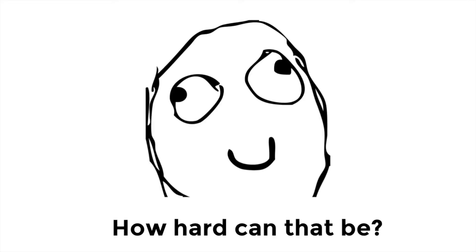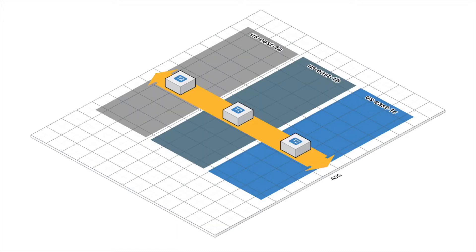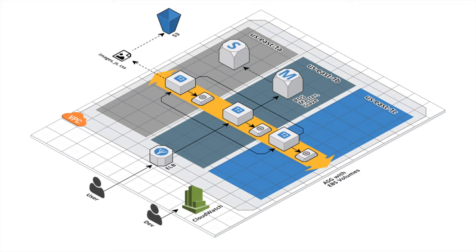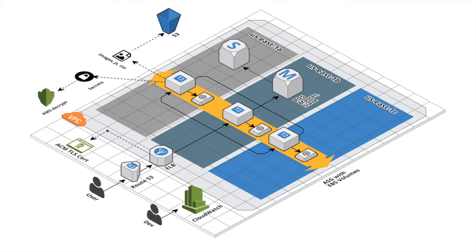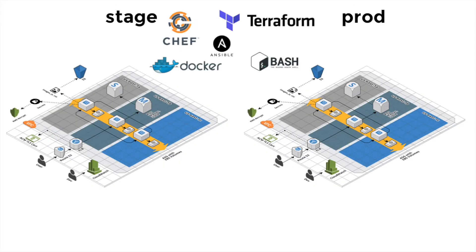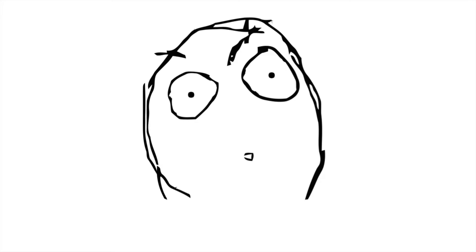Imagine you just finished building your latest application and it's time to deploy. How hard can that be? It starts out pretty easy with one server, but soon you realize you need more than one for high availability. Then you need a load balancer, you've got to store data somewhere, monitoring and alerting, you've got to set up the whole network topology and route tables, you've got to do DNS and TLS and secrets management, and then you've got to do that all across multiple environments — learning about all these new tools to manage all of this, CI servers to test all of this. Which makes you feel a little bit like that.